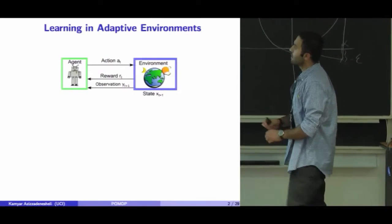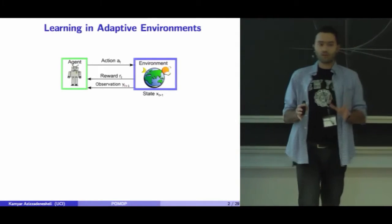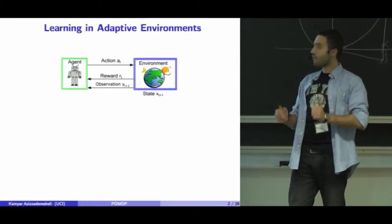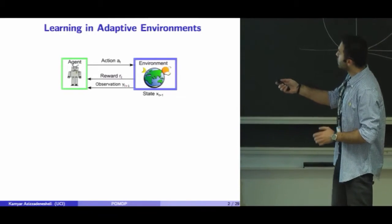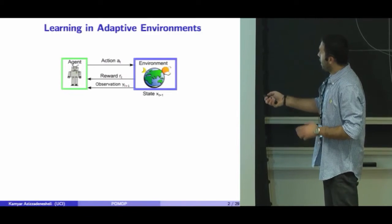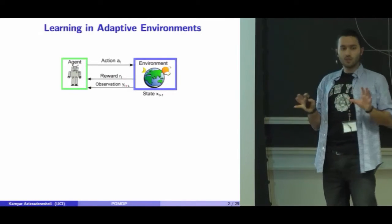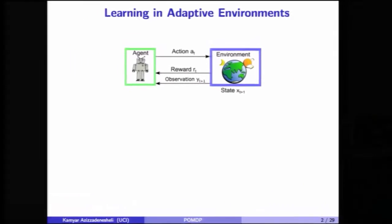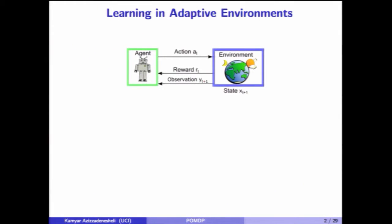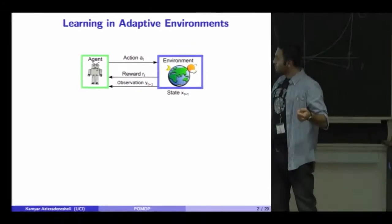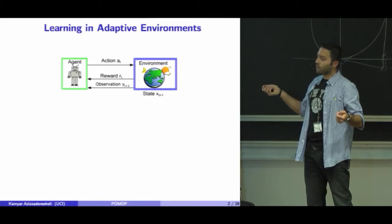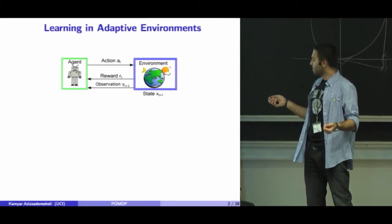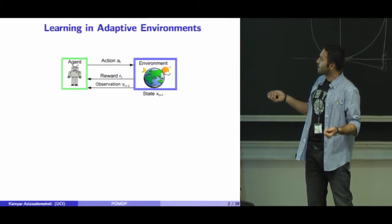In reinforcement learning, we are trying to study the agent and environment interaction. At each time, we assume the environment is at some configuration — we call it a state — which is hidden from the agent. The agent chooses some action and applies it on the environment. The environment goes to a new state, also hidden from the agent. As a result of this transition, the environment provides some reward and emits some observation, and the agent has access only to this observation.